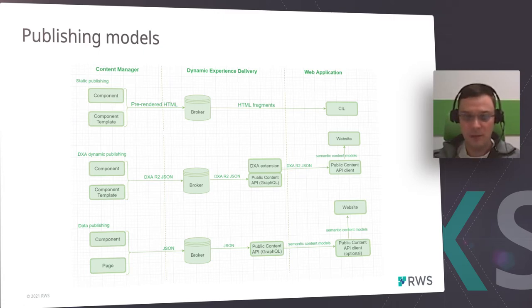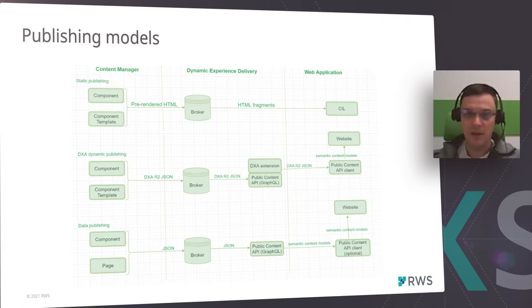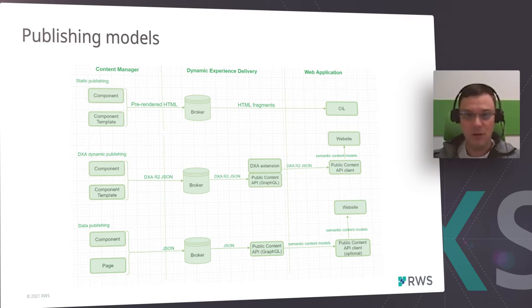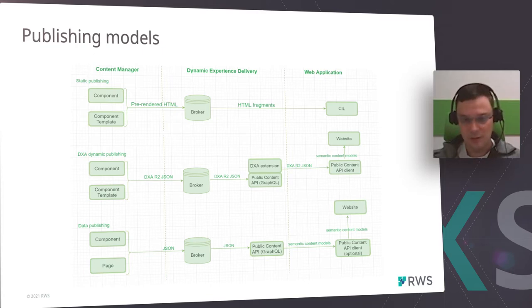Taking all this into account, RWS decided to focus Content Manager on content modeling productivity tools and content creation, as well as intelligence services. Dynamic Experience Delivery will focus more on content search, content retrieval, and mashups. Data publishing will become the standard way to publish content from Content Manager to Dynamic Experience Delivery.